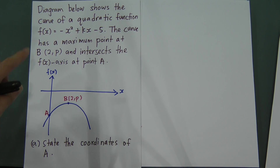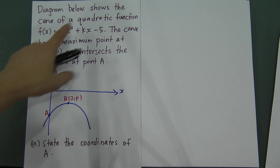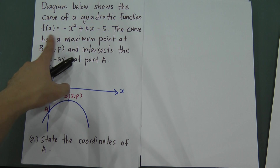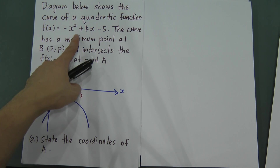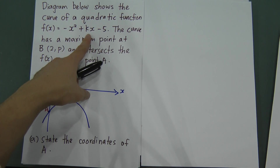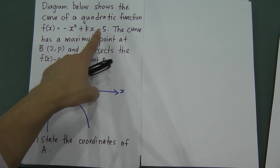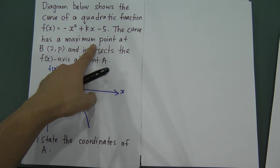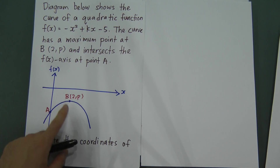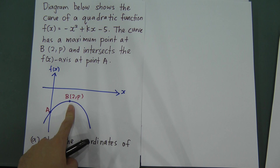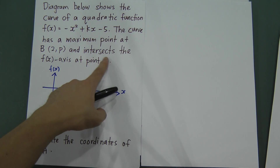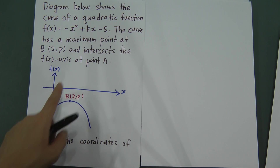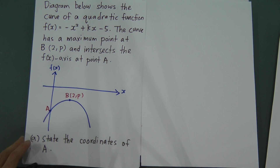The diagram below shows the curve of the quadratic function f(x) = -x² + kx - 5. The curve has the maximum point at point B, and intersects the f(x)-axis at point A.